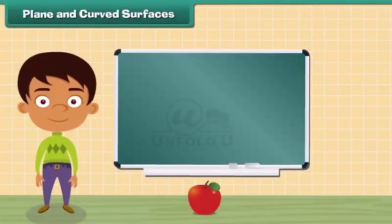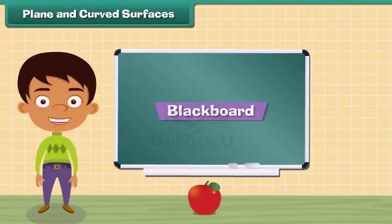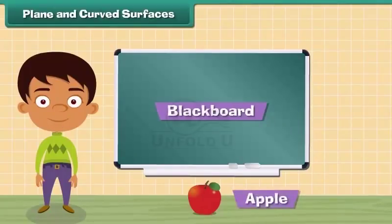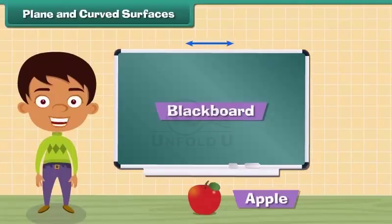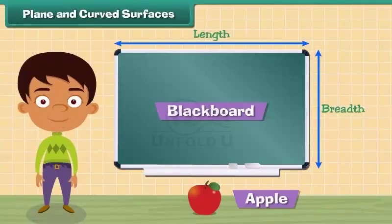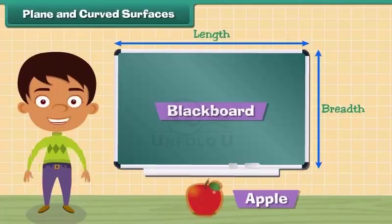Plane and curved surfaces. Look at these two objects: a blackboard and an apple. Blackboard's plain surfaces are surfaces which have length and breadth. When you touch the surface of an apple, its surface is not straight. This is a curved surface.